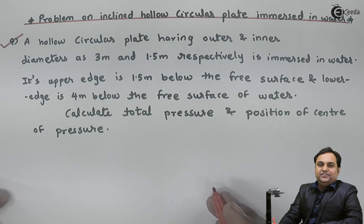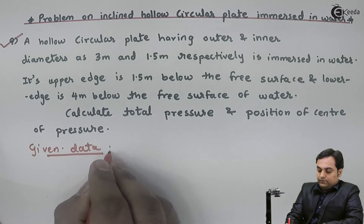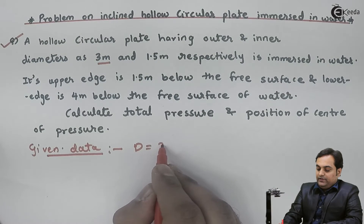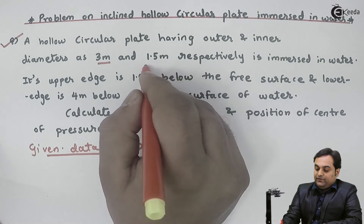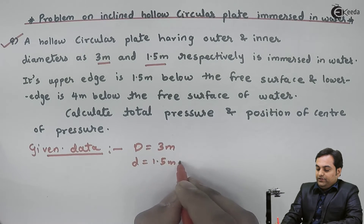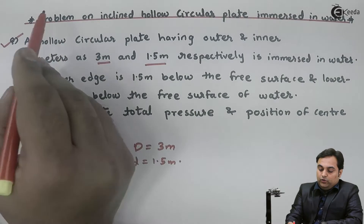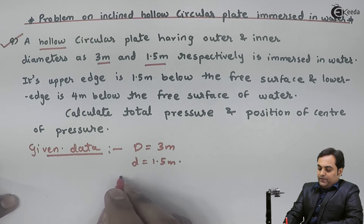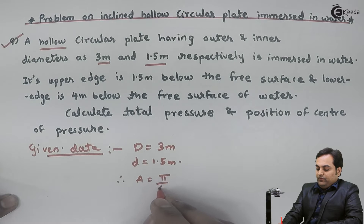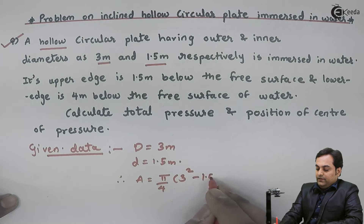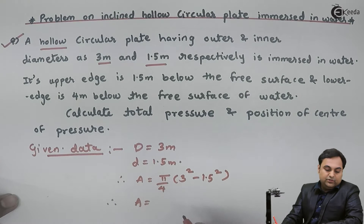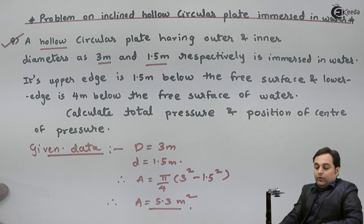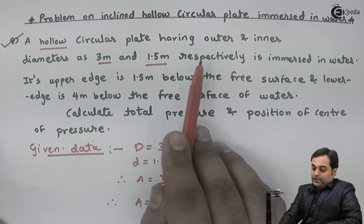Writing the data: the outer diameter capital D is 3 meter and inner diameter small d is 1.5 meter. Since this is a hollow circular plate, we can calculate the area as capital A equals pi by 4 times (outer diameter squared minus inner diameter squared). The area comes out to be 5.3 square meters.